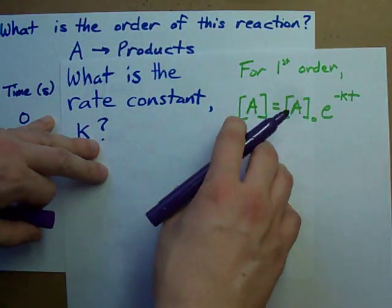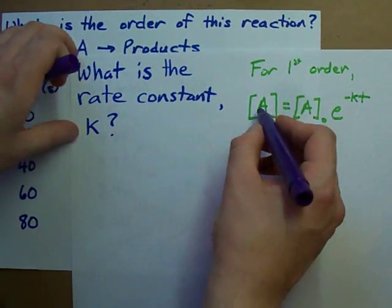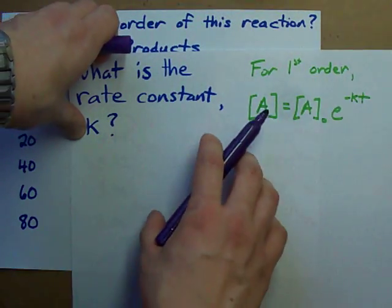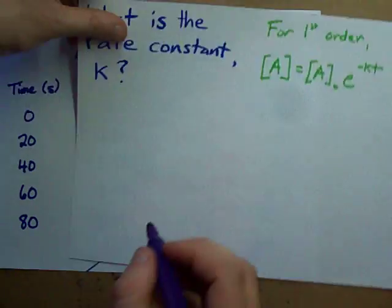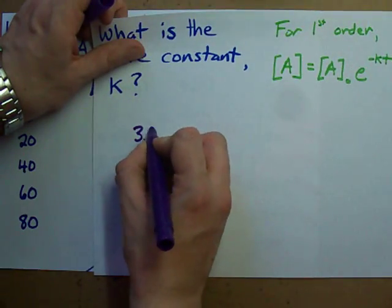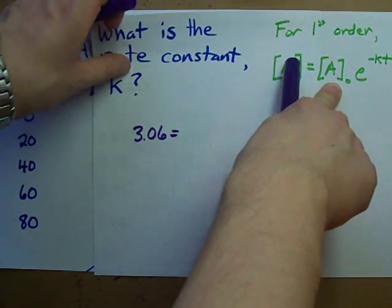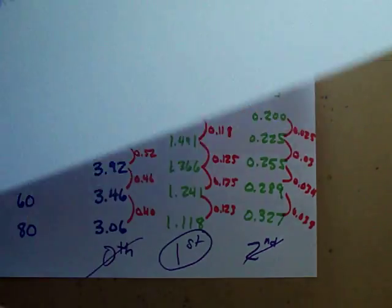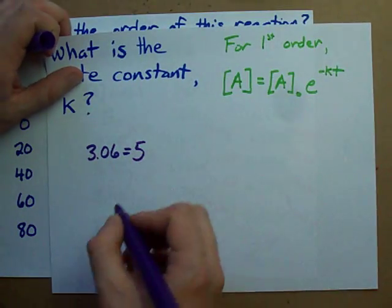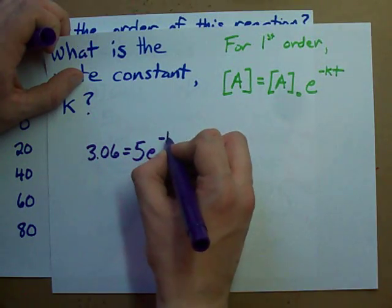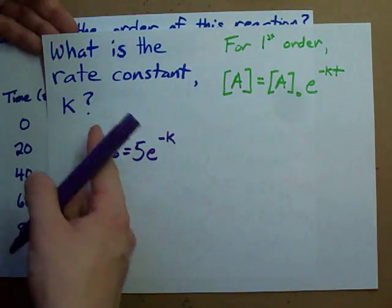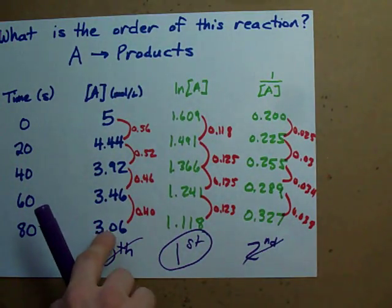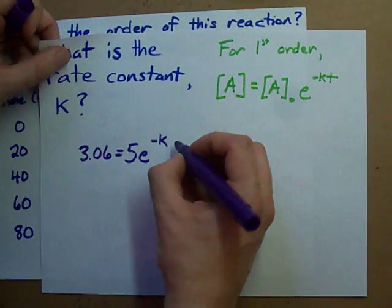Taking a look at my equation, the concentration of reactant at any particular time, I'm going to pick the 80 here. 3.06 equals the initial concentration of reactant. In this case, the initial concentration is 5 times E to the negative K. I don't know what that is. That's why they're asking for it. And time. The time that it's at 3.06 is 80 seconds.